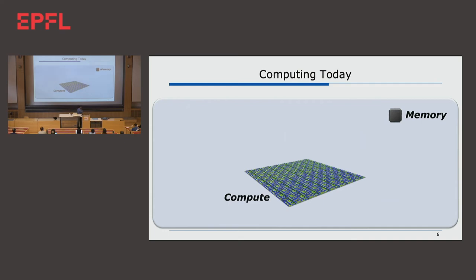In spite of significant progress over the past 60 years, computing today is pretty basic. You actually have a two-dimensional plane of transistors, some wire stacks in the third dimension, and this memory chip sitting very far from the compute chip. You spend enormous time and energy shuttling data back and forth between the compute chip and the memory chip. We talked about the miniaturization wall — that's where we are.